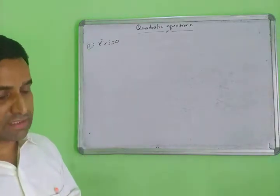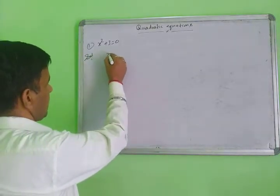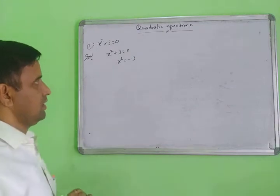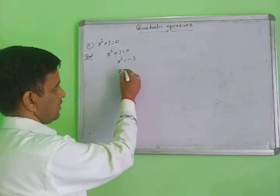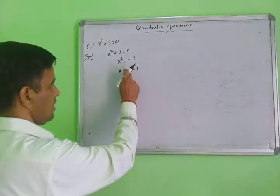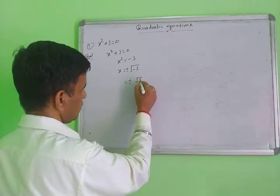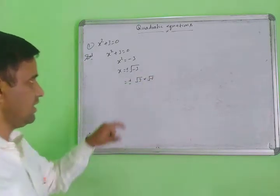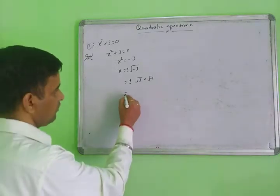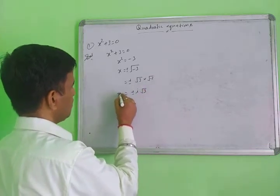Now question number one from exercise 5.3. Solution: x² + 3 = 0, so x² = −3. Taking the square root of both sides: x = ±√(−3). We can write √(−3) as √3 · √(−1), and since √(−1) = iota, the value of x is ±iota√3. These are the roots of the given equation.